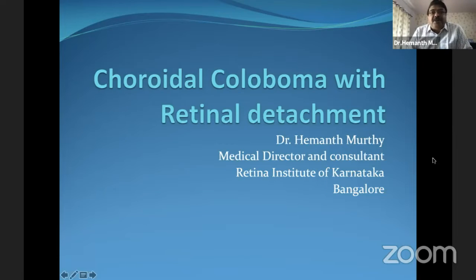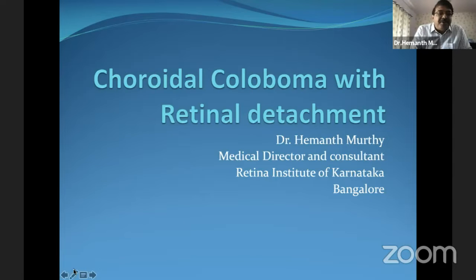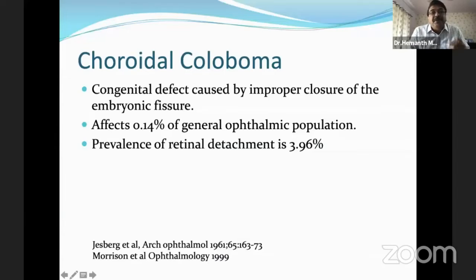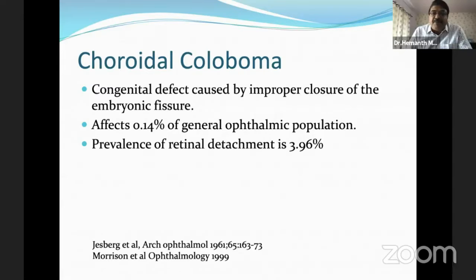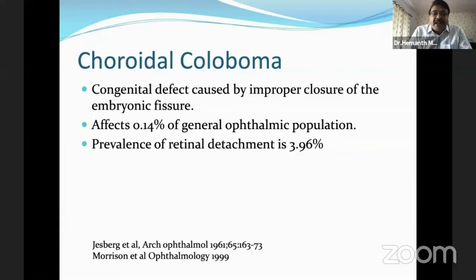I'll be speaking on choroidal coloboma with retinal detachment. The choroidal coloboma is caused by a congenital defect — specifically, the improper closure of the embryonic fissure. It affects about 0.14% of the general ophthalmic population, and the prevalence of retinal detachment is 3.96%.